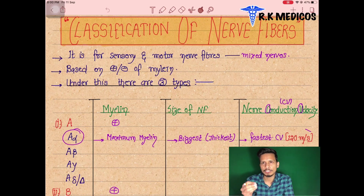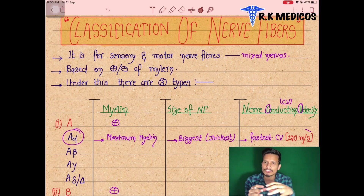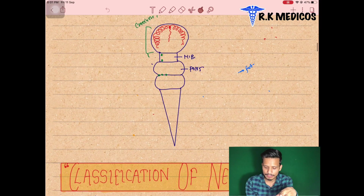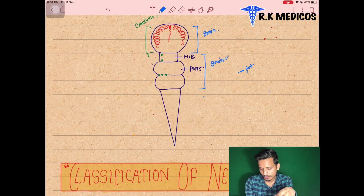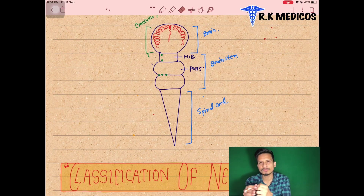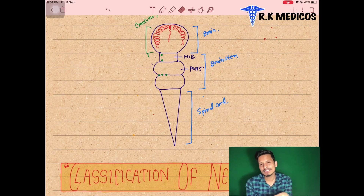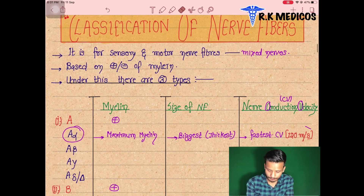We are going to see what neurons are and how the connections of these neurons form the basic nerve fibers, and how we can classify these nerve fibers. Look at this — this is our central nervous system, in which this is the brain part, basically the cranium, and all these structures are called as the brain stem. This is our spinal cord, and now we are going to see how the fibers begin, where they start, and where they finish.